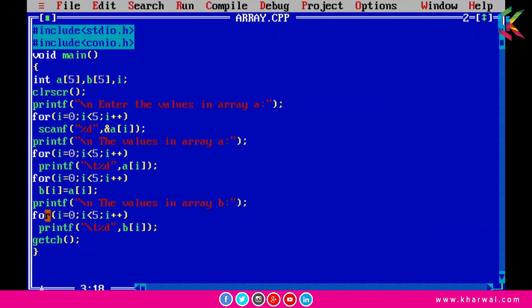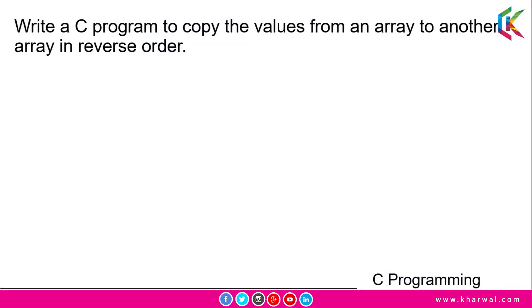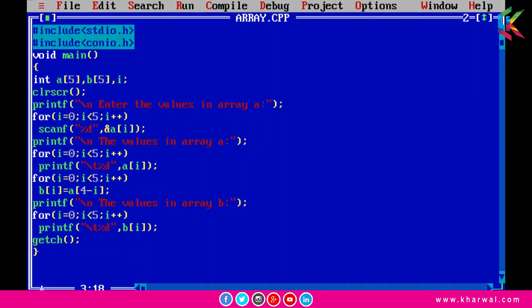Moving forward, we are now going to write a C program to copy the values from an array to another array in reverse order. Let me open up the Turbo C++ compiler. In this program we are going to learn how to copy elements from one array to another array in reverse order. I have declared two arrays, a and b, of size 5.